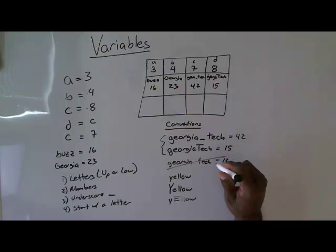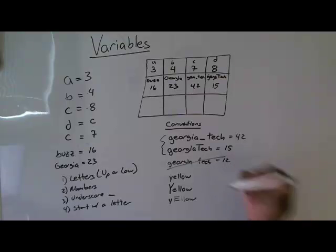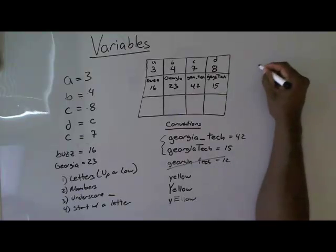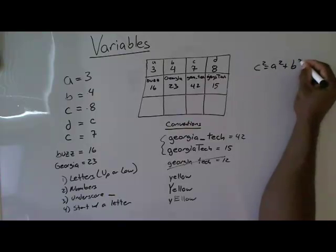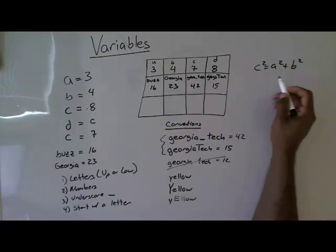The thing about variable names also is you want to be somewhat descriptive, but you don't want to be too long. So, depending on the problem, like if I was doing the Pythagorean theorem, which is C squared equals A squared plus B squared, then I would probably name my variables A, B, and C.